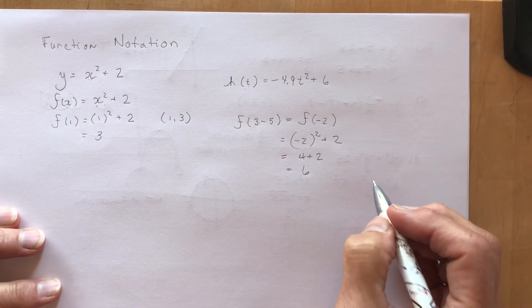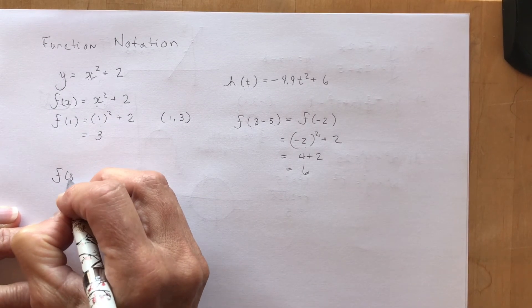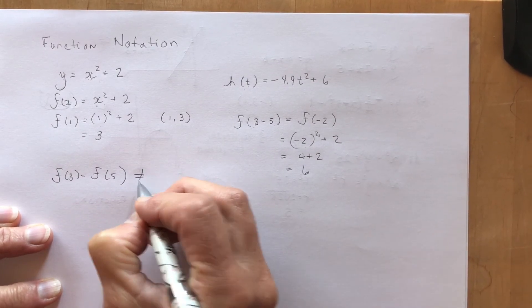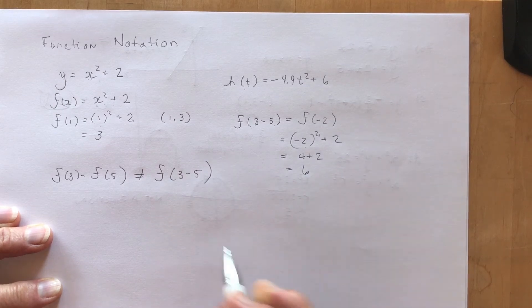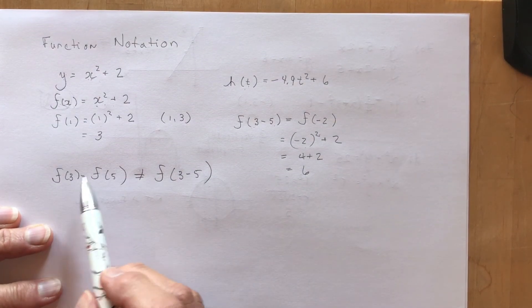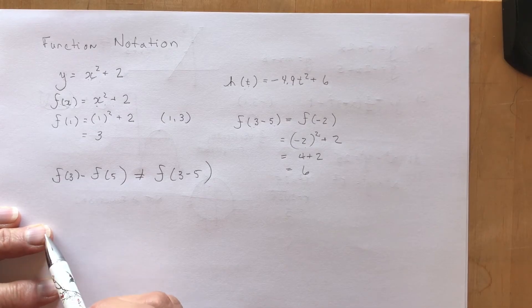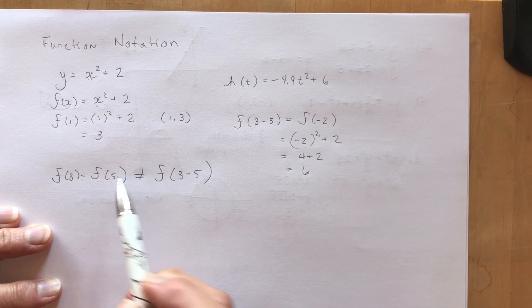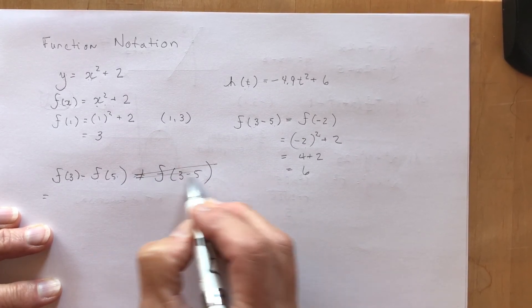There's also another way of doing this. They might ask you what is f at 3 minus f at 5? This is not equal to f at 3 minus 5. This says what is the height of the function when x is 3 minus the height of the function when x is 5. So f at 3, I plug in 3, that would be f at 3 minus f at 5, that would be 5 squared plus 2.